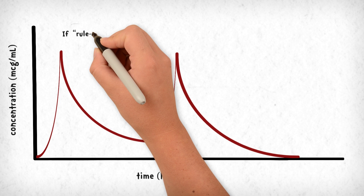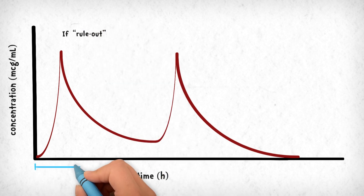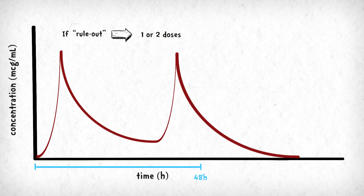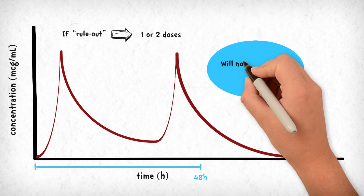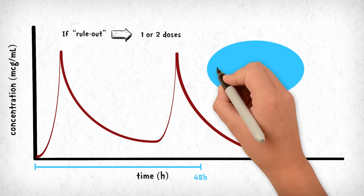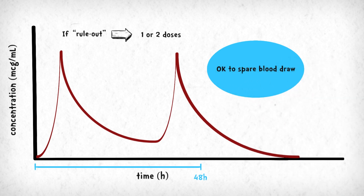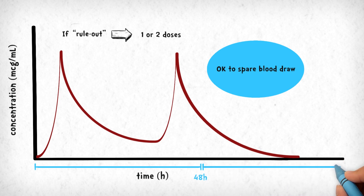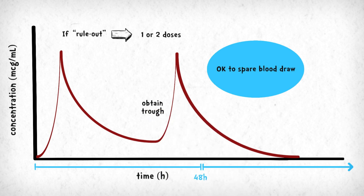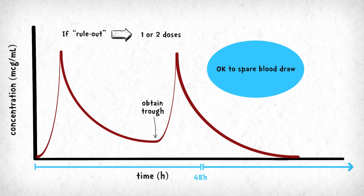If you are sure you are only treating for a rule-out period — typically 36 to 48 hours — the neonate will only be exposed to one or two doses of gentamicin, and levels would not significantly accumulate, so you could consider sparing the neonate from the extra blood draw. But if you may treat beyond 48 hours, trough monitoring should be done after the first dose to improve efficacy and minimize toxicity.